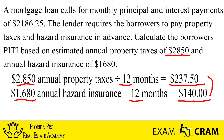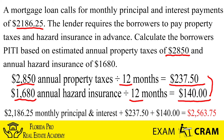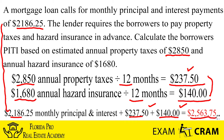These are the two numbers we want to add on to our total payment. In step three, we bring down the principal and interest of $2,186.25, then add the monthly property tax of $237.50 and the monthly hazard insurance of $140. We add all of these together, and this gives us a grand total of $2,563.75.